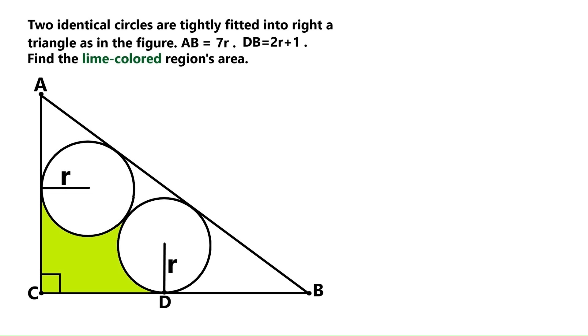This geometry problem is absolutely fabulous, so make sure you don't miss any part of it. We've got this right triangle, and these two identical circles are crammed inside the right triangle. Their radius is r, and we are told this side AB is 7r, and that this segment down here is 2r plus 1, and we've got to find the area of this weird shaped lime colored region.